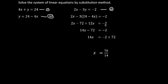After simplifying, 12x equals negative 2. Combining the x terms: 2x plus 12x gives 14x. So 14x minus 72 equals negative 2.